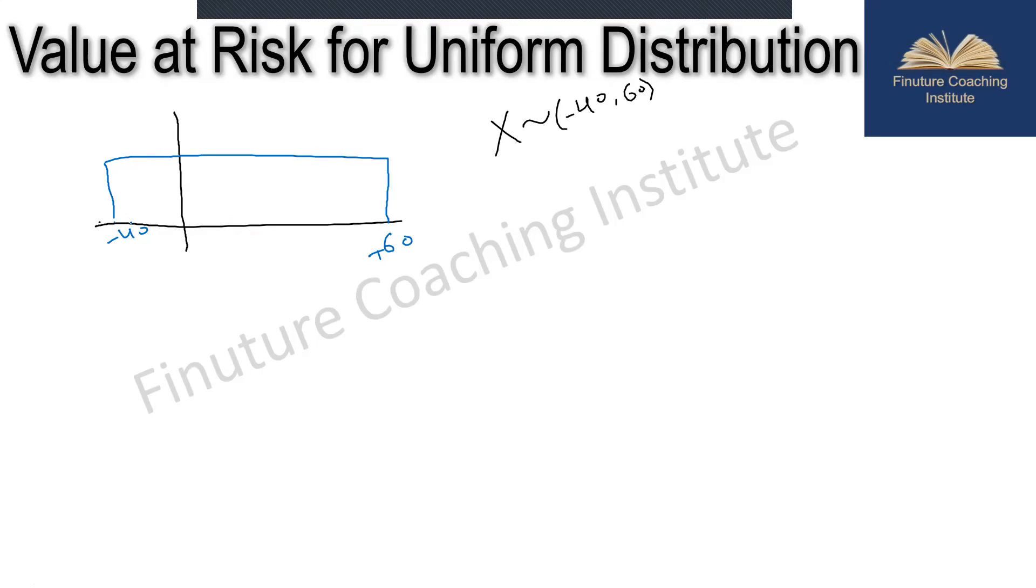We have been asked what is the 95th percentile VaR and expected shortfall. Usually in normal distribution we just find this point. In this case the logic would be the same, but let's see how do we find this x. We have been given that it's uniformly distributed.